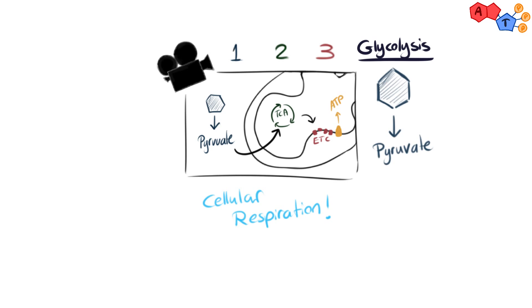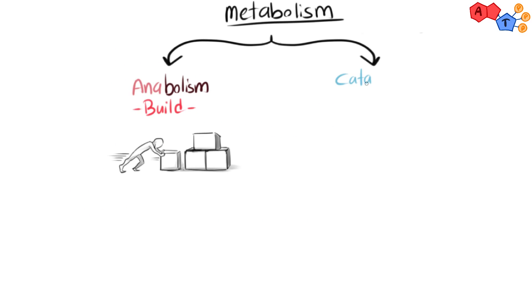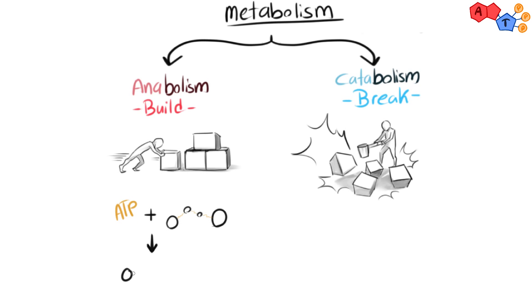Before we begin, we need to understand the two types of metabolism: anabolism and catabolism. Anabolism is the type that uses energy to construct components of cells like proteins and nucleic acids, while catabolism is the type that breaks down organic matter and usually harvests energy, for example, cellular respiration.